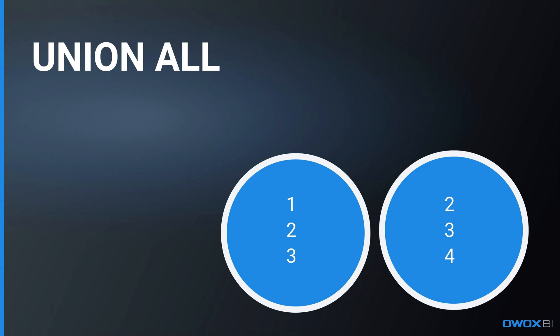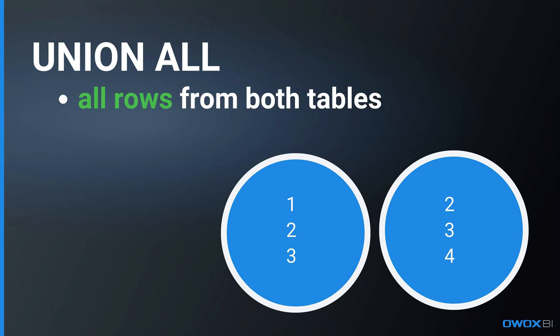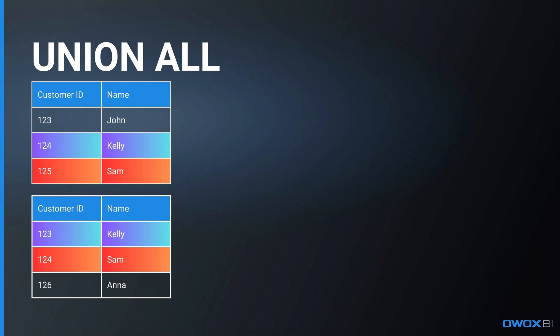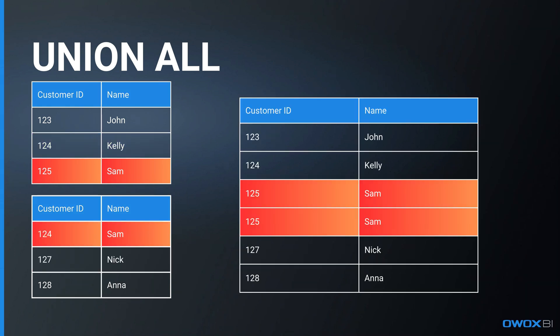Let's start with Union All. Union All includes all rows from both tables, allowing duplicates, which is useful for capturing all occurrences of data. For example, our first customers table includes IDs 1-3, 1-4, and 1-5 with names John, Kelly, and Sam. Our second customers table includes IDs 1-5, 1-7, and 1-8 with names Sam, Nick, and Anna. Some customers appear in both tables. Union All will list Sam twice, as he appears in both tables — so in the result set you will see two rows with customer ID 1-5. Union All is used when you need a comprehensive combination of both data sets.